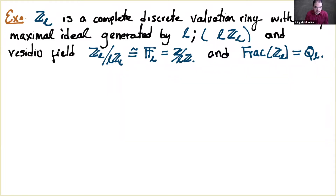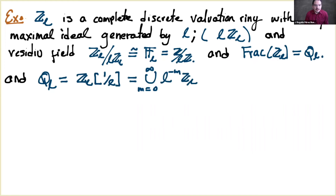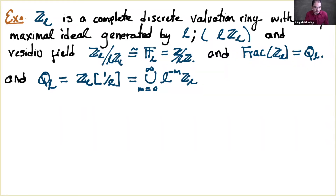We know that ℤ_ℓ is a profinite topological group and therefore totally disconnected, with all these properties. One interesting way to see ℚ_ℓ is as the localization of ℤ_ℓ at the prime ℓ — equivalently, just inverting ℓ in ℤ_ℓ — and it can be seen as the union of the sets ℓ^{-m}·ℤ_ℓ. Miriam presented this more analytically, but these are the balls of a certain radius.